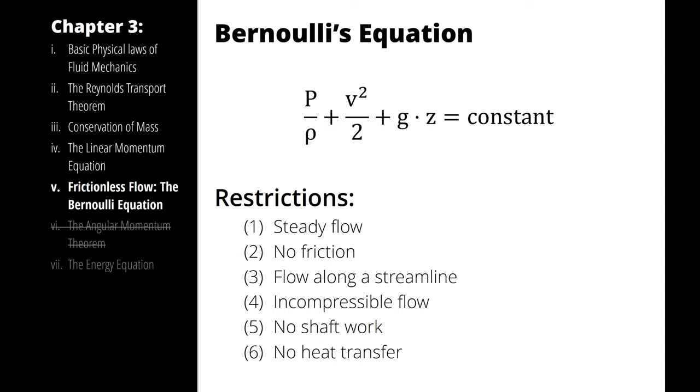Then the quantity you get as a constant is the pressure over the density plus the velocity squared over two plus gravity times the height. That term is going to be constant when you have all six of these assumptions in place.